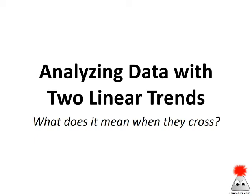Many times when we're doing an experiment where we're systematically changing one variable, we end up with data that actually has two different linear trends in it. So let's take a look at how we can analyze that when that occurs.